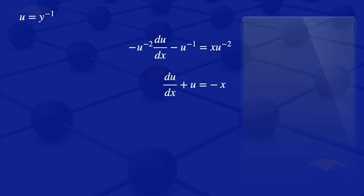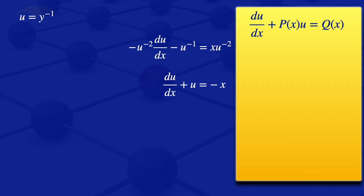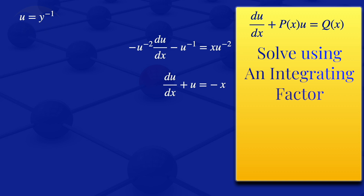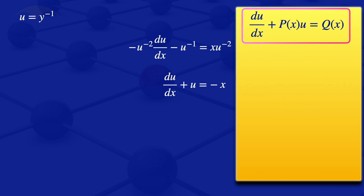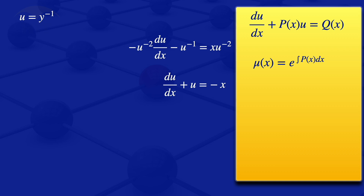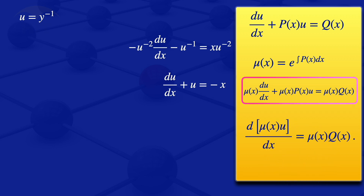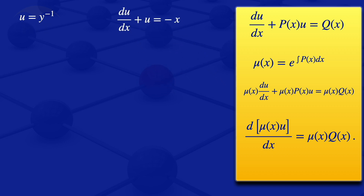For a linear first order ODE of the form: derivative of U with respect to X plus P of X multiplied by U is equals to Q of X, we can solve using an integrating factor. The integrating factor, denoted mu of X, is equals to the exponent of the integral of P of X with respect to X. We multiply the equation by the integrating factor to solve it.